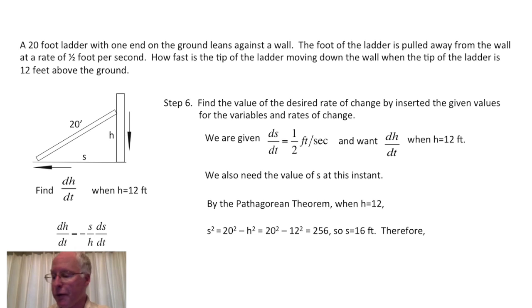Therefore, when we make the substitutions, we now have values for s, h, and ds/dt. We find dh/dt is minus 16 feet, that's because s is 16, divided by 12 feet, because h is 12, times one half foot per second. We've kept the units in this problem. Notice that when cancellation and simplification happens, we get an answer in feet per second. And that is what we expect for units of dh/dt. So at the instant when h equals 12, the dh/dt is minus two-thirds foot per second.